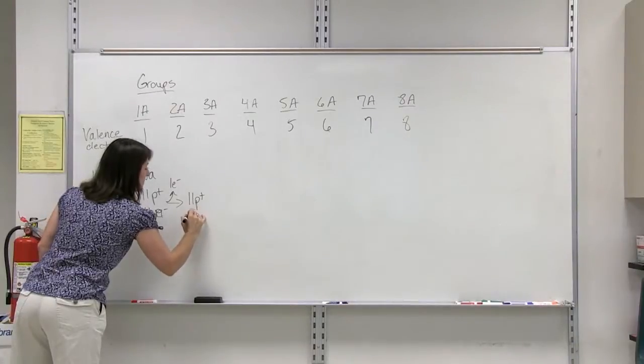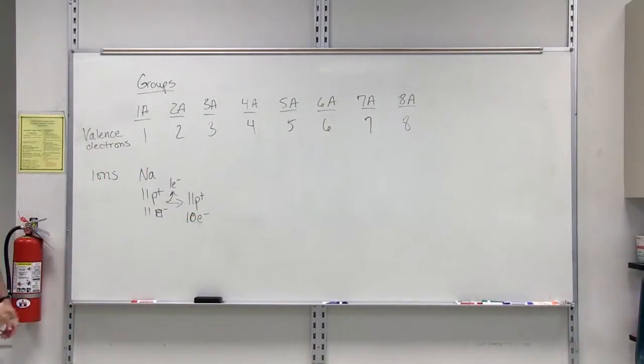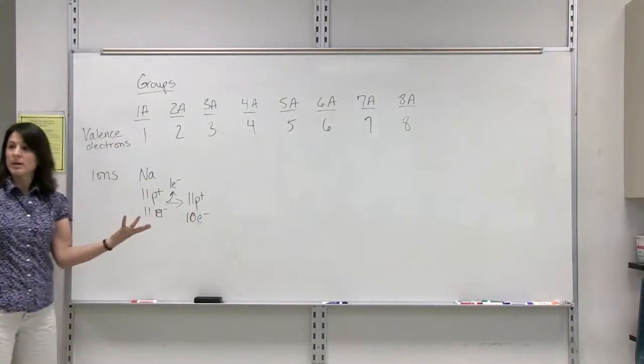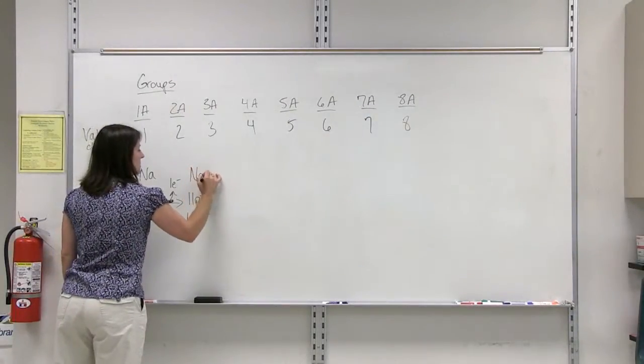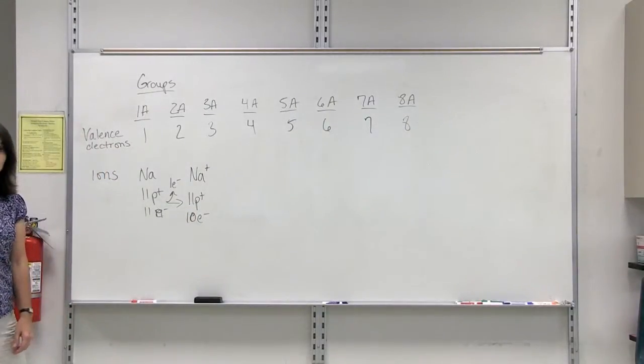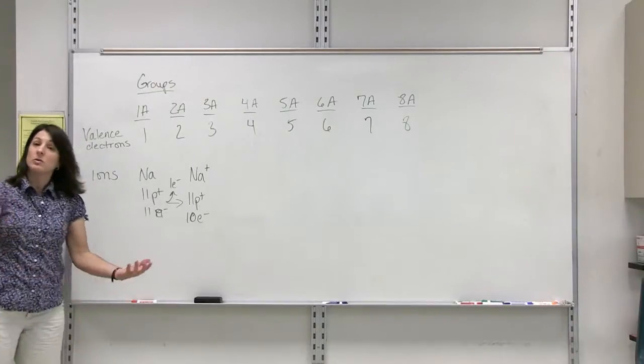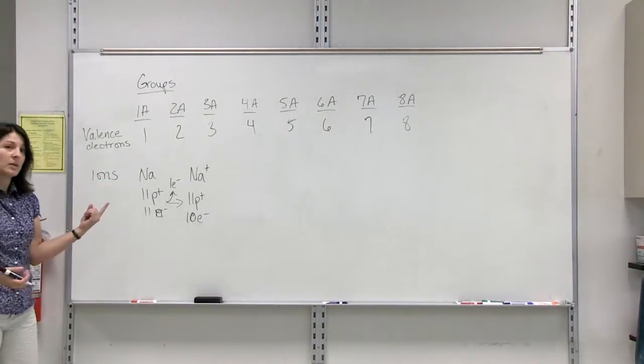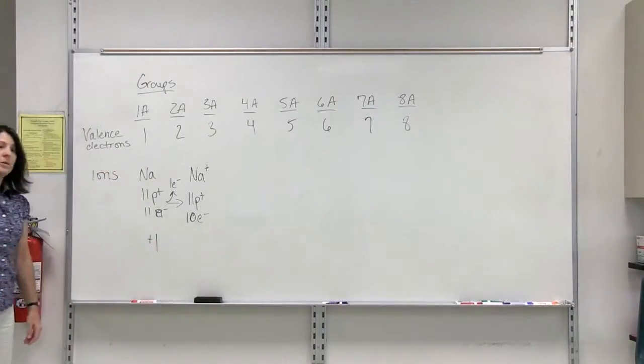It's going to have 10 electrons. Now it is not neutral anymore. It has one extra positive charge versus negative charge. So now this would be sodium with a positive charge, positive 1. So every element that's in group 1A is going to do the same thing. They are going to lose their 1 valence electron, and it's going to give them a plus 1 charge.